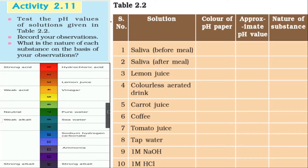This is Activity 2.11 from your NCERT textbook: test the pH value of the solutions given in Table 2.2. In this table we are given 10 compounds and we have to test the pH value of each compound. We have to record the color shown by the pH paper, the approximate value of pH, and the nature of the substance.